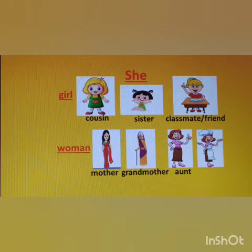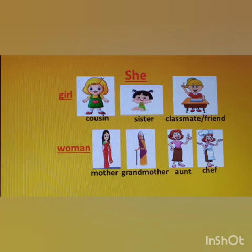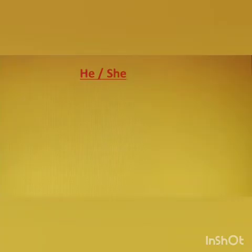Your aunt is a woman, so we will say 'she is your aunt.' This woman is a chef, so we will say 'she is a chef.' Always remember: we use the word 'she' when we talk about a girl or a woman. Now let's learn more about 'he' and 'she' with the help of examples.